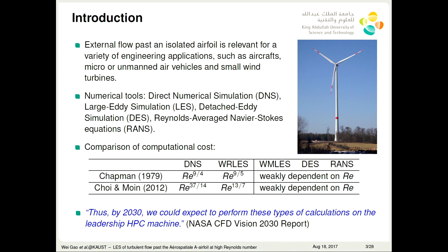RANS just solved the equation in the time-averaged sense. For LES and DES, they resolve the large scales and model the effects of small scales with some models. DNS resolves all the scales. So the computational cost of this method is different. For DNS and wall-resolved LES, the computational cost scales with Reynolds number. According to NASA CFD Vision 2030 report, by 2030, we could expect to perform this type of calculations on leadership HPC machines. That means for wall-bounded turbulent flows, Reynolds number as high as millions, it is now impossible to perform the wall-resolved LES and DNS on such kind of flows.